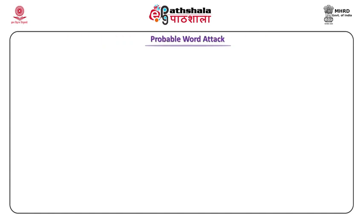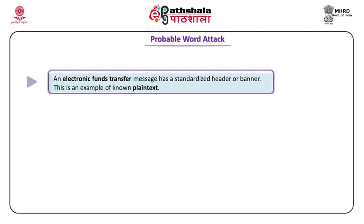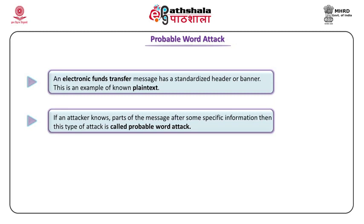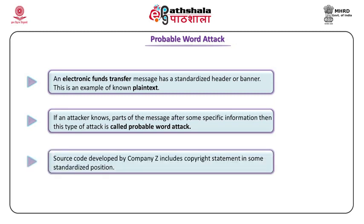Probable word attack: when an electronic fund is being transferred through net banking on the internet, certain parts of the messages are known — for example, in the initial round of a transaction, user information is being transferred. If certain information is known, it is called a probable word attack. Similarly, if source code from company Z is transferred over the internet, it is known that in the initial phase, the company's copyright, name, and logo are appended.